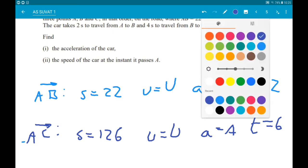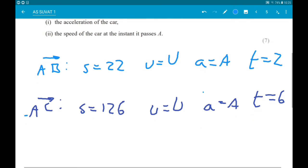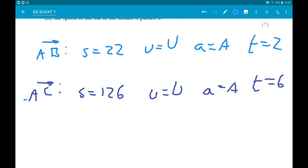So for the first one, we get 22 equals 2U add one-half A times 2 squared. 2 squared is 4, half of 4 is 2, so we have 2A. Let's call that equation 1.